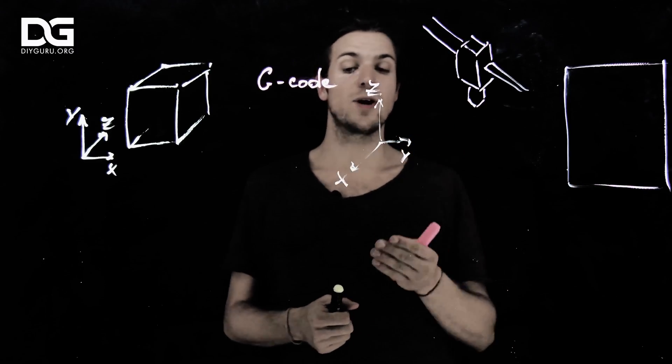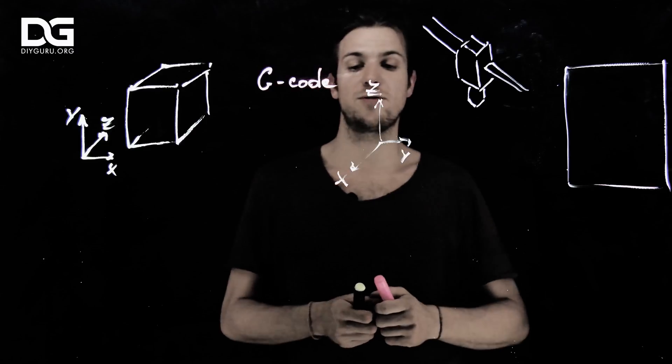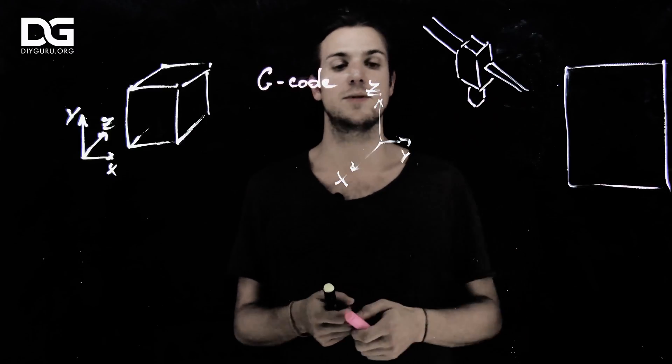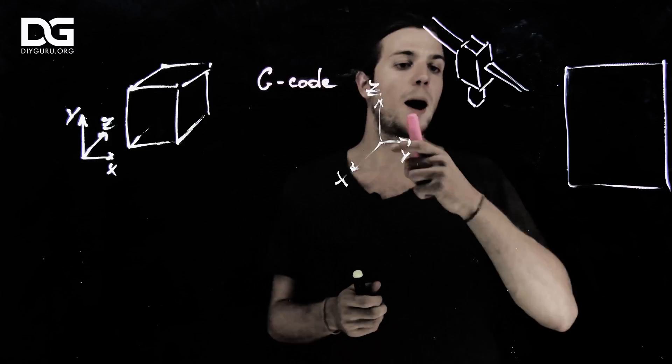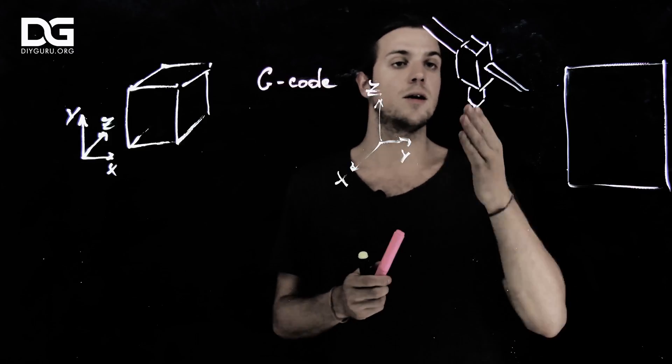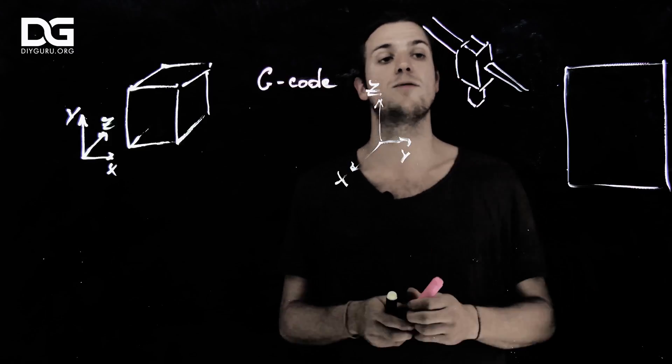So here you can see again, we have our three axis frame of reference, X, Y, and Z. Z is pointing up this time, this is a standard convention. Here is our tool, here I draw the print head of a 3D printer.